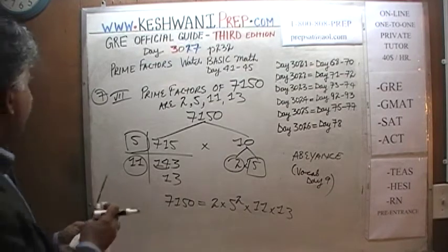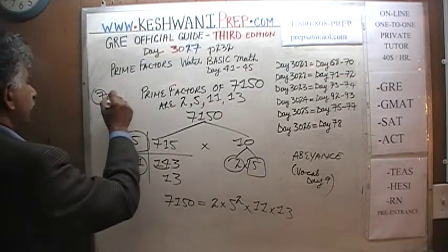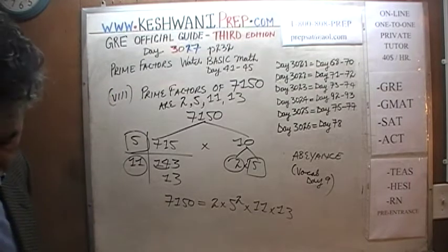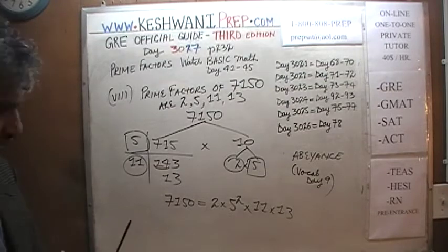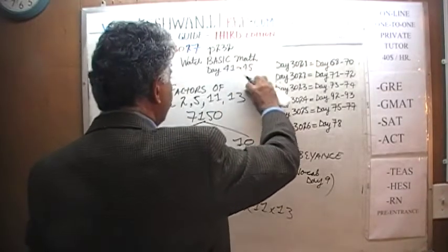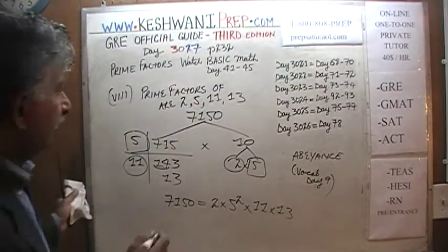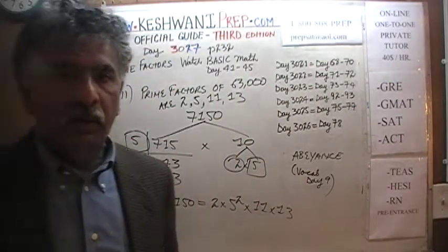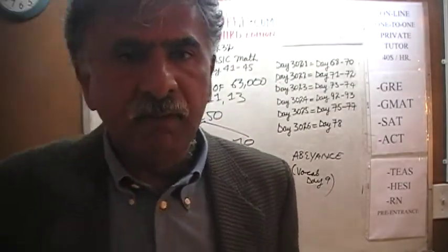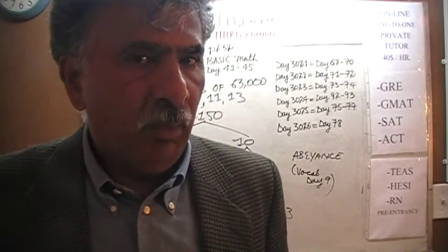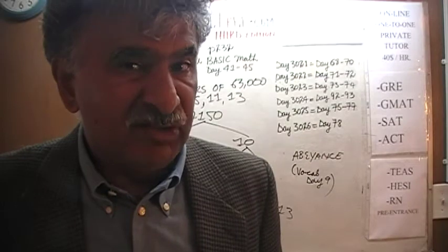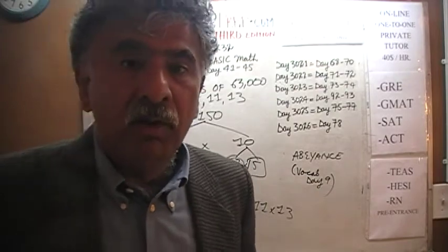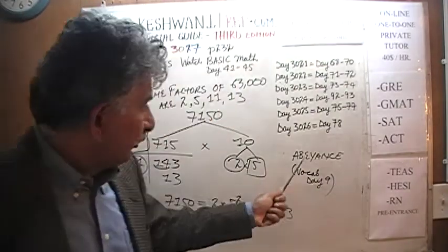That's number 8. You do the next one — pause the video. The question is: what are the prime factors of 63,000? If you're wondering how the GRE would ask that, it would be a word problem. If you're interested in learning that, watch those five videos I mentioned — Basic Math day 41 through 45.